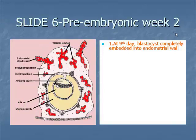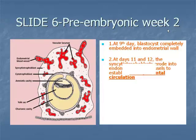Item 2: the erosion into endometrial blood vessels by syncytiotrophoblast marks days 11 and 12, forming uteroplacental circulation which allows maternal blood into the syncytiotrophoblast lacunar networks.